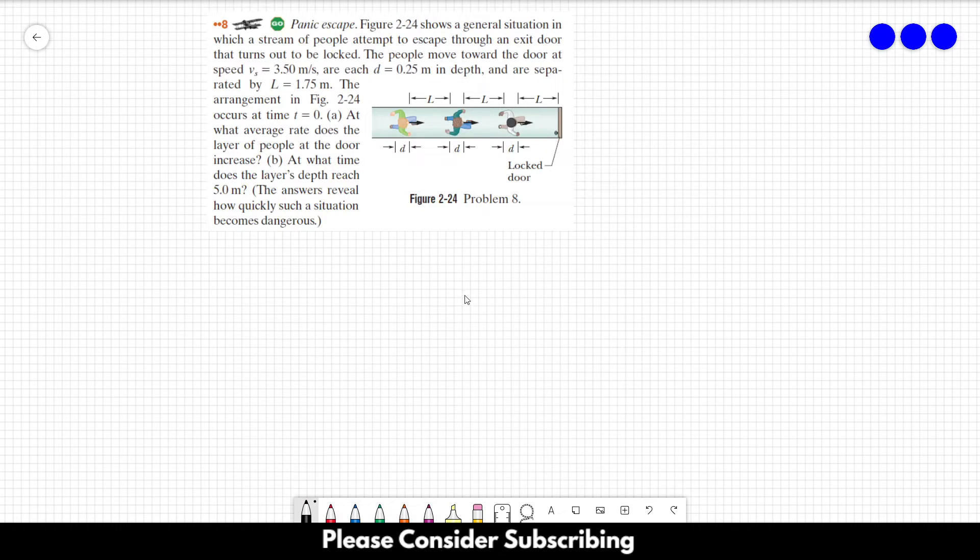Number eight, Panic Escape. Figure 2.24 shows a general situation in which a stream of people attempt to escape through an exit door that turns out to be locked.